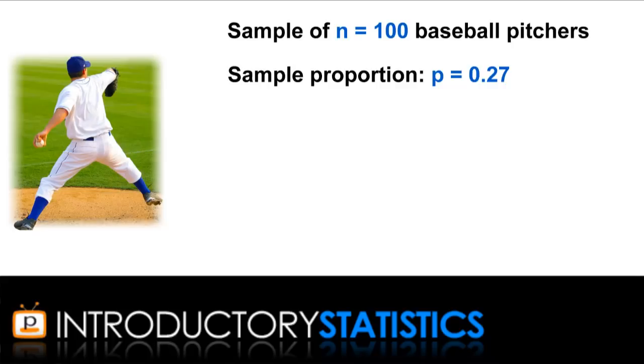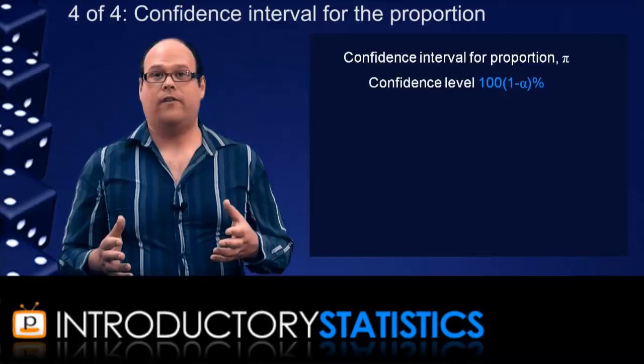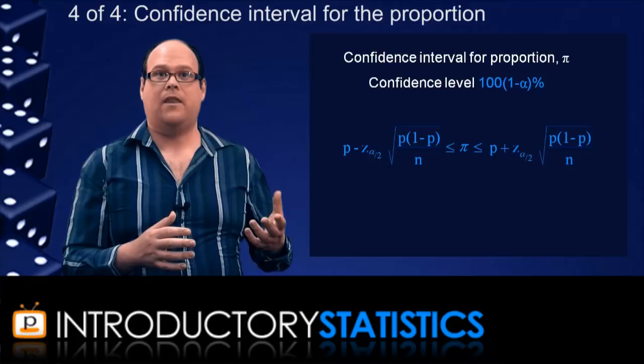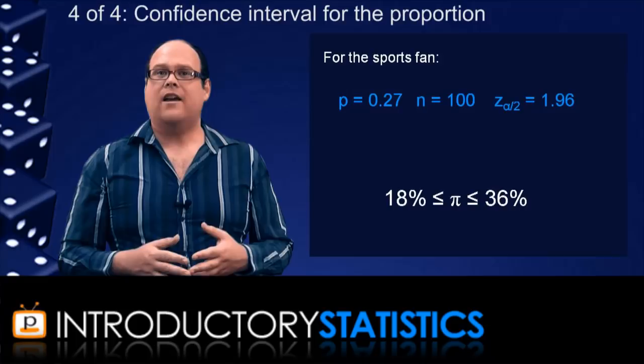Similarly to estimating a population mean, this sample proportion p will form the center of the confidence interval for the population proportion pi. In fact, the formula for the confidence interval is given here. The symbols in this interval are the same as the population mean. For example, the fan wanted to construct a 95% confidence interval, and a little bit of math shows that this would be the set of values from 18% to 36%.